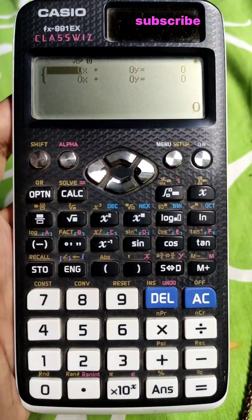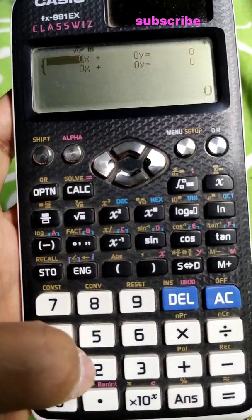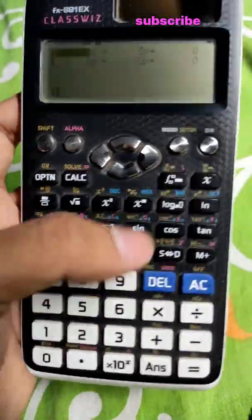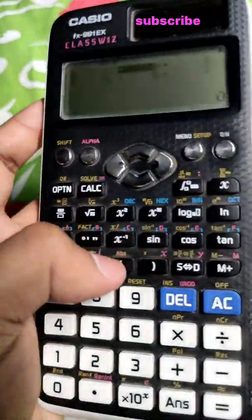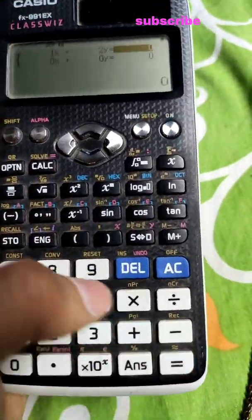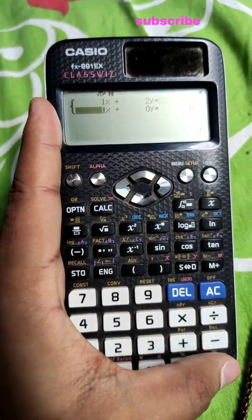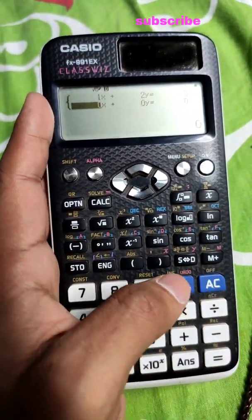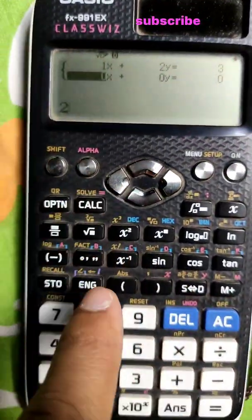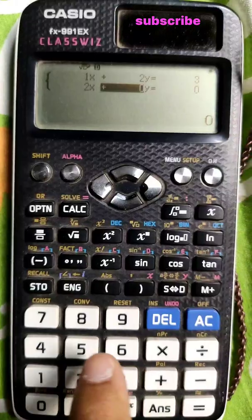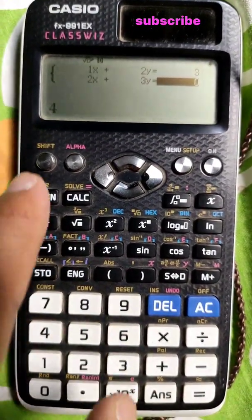So we have x plus 2y equal to 3 as the first equation, and the other equation is 2x plus 3y equal to 4.